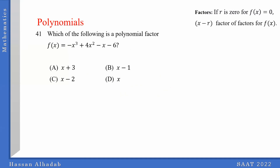Which of the following is a factor for this polynomial? The idea is: if you plug in the number and you get 0, then it's a factor. So for a point to be a factor, plug it into the polynomial and if you get 0, then it's a factor. The options give us x = negative 3, x = 1, x = 2, and x = 0.